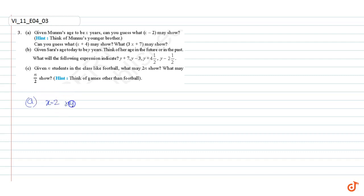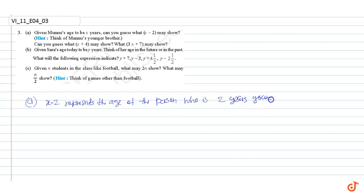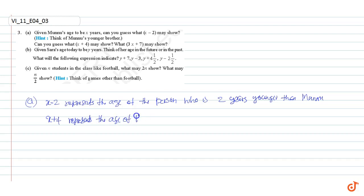x minus 2 represents the age of the person who is 2 years younger than Manu. x plus 4 represents the age of the person...